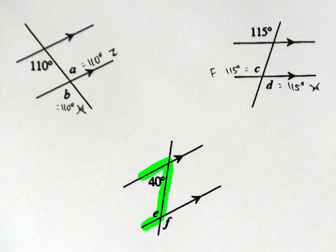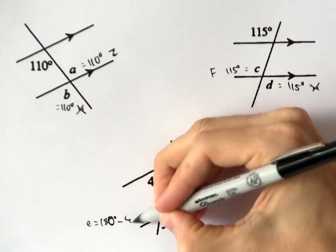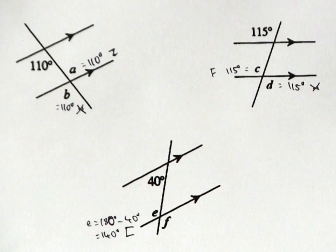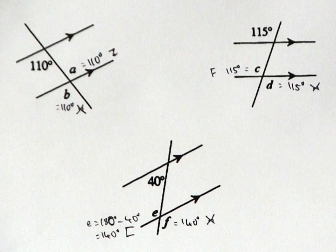Angle E and 40 degrees are Co-Interior, so they must be supplementary — they have to add up to 180 degrees. That means E must be 140 degrees. And so F must also be 140 degrees, because it's vertically opposite E.